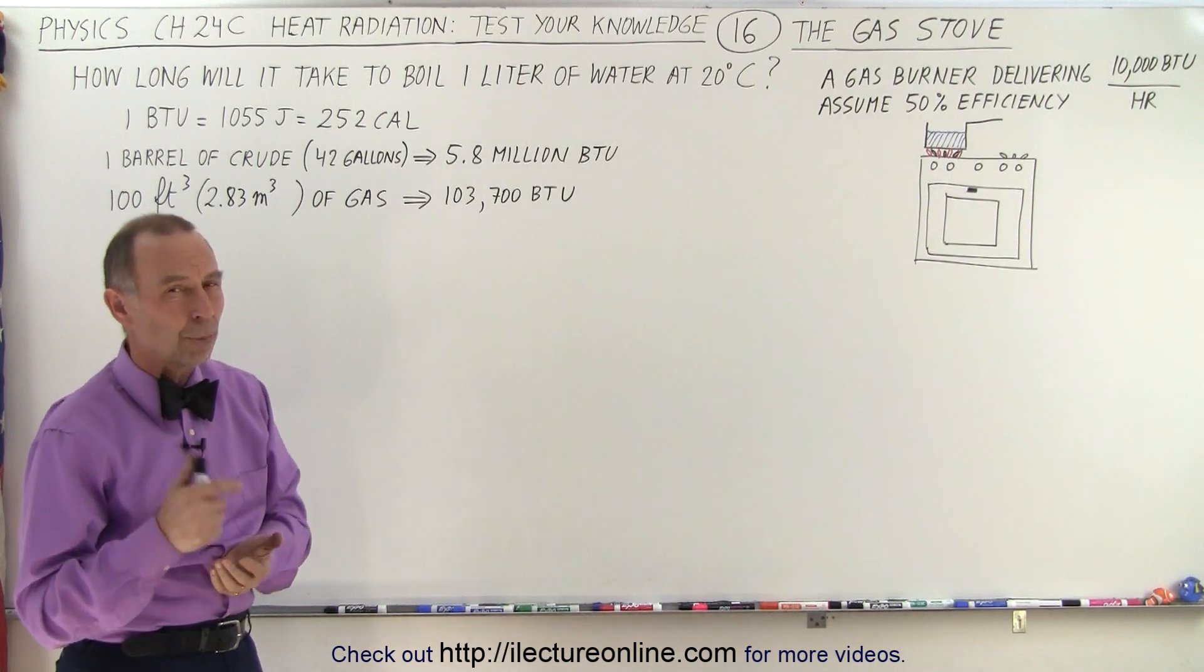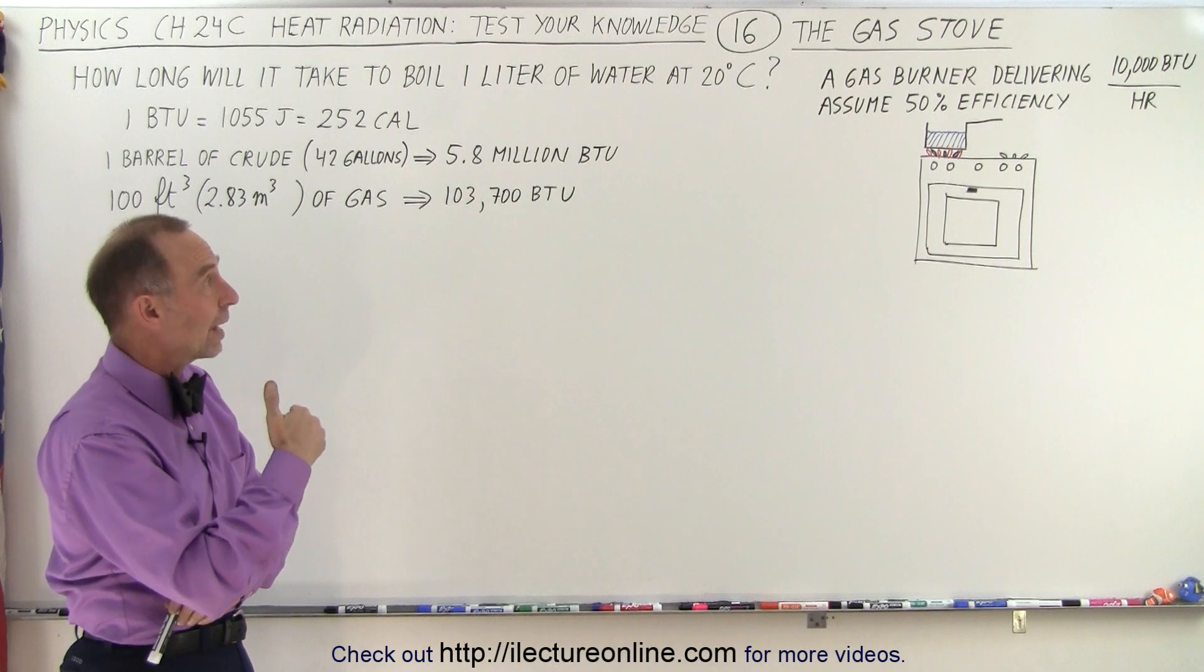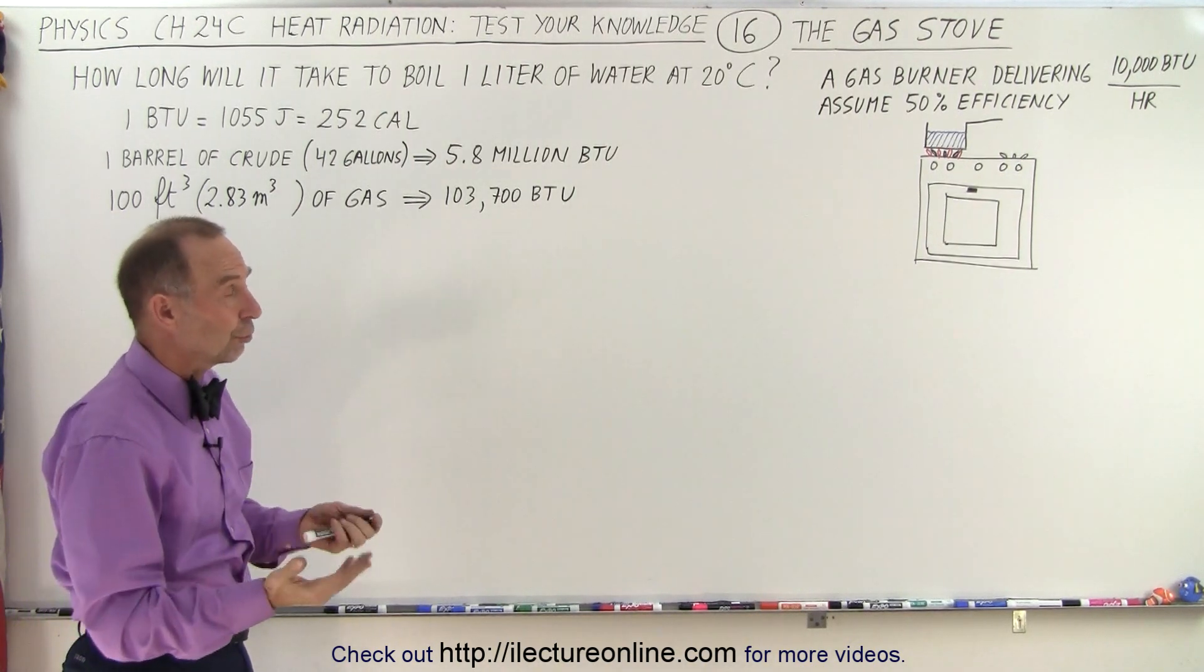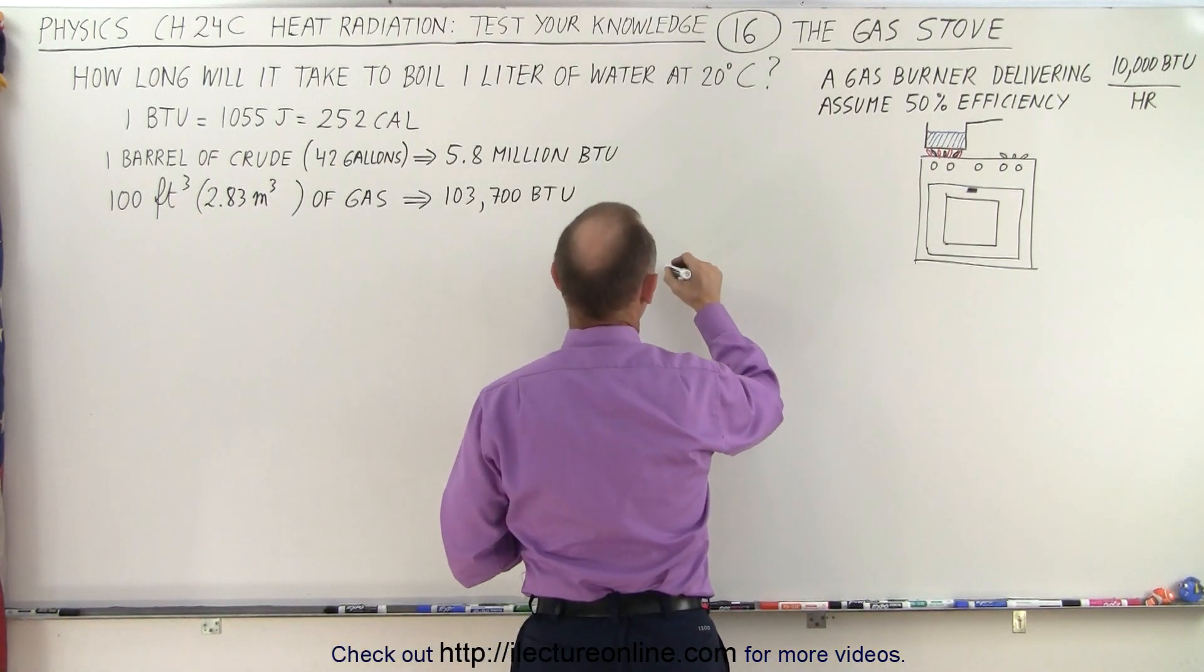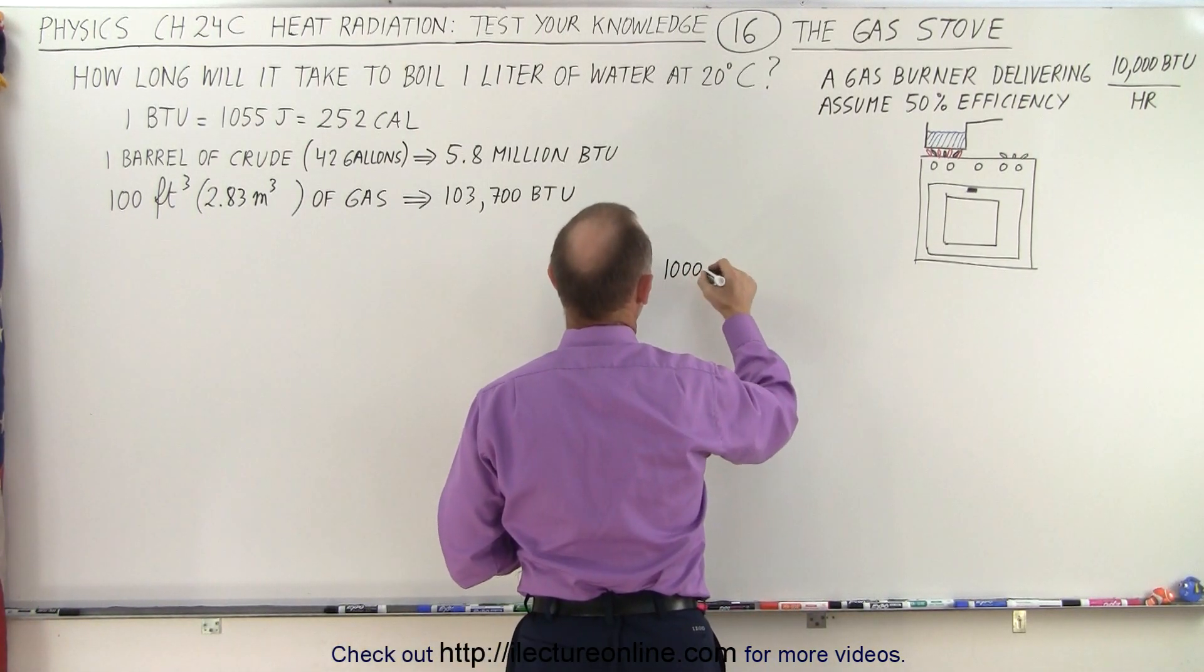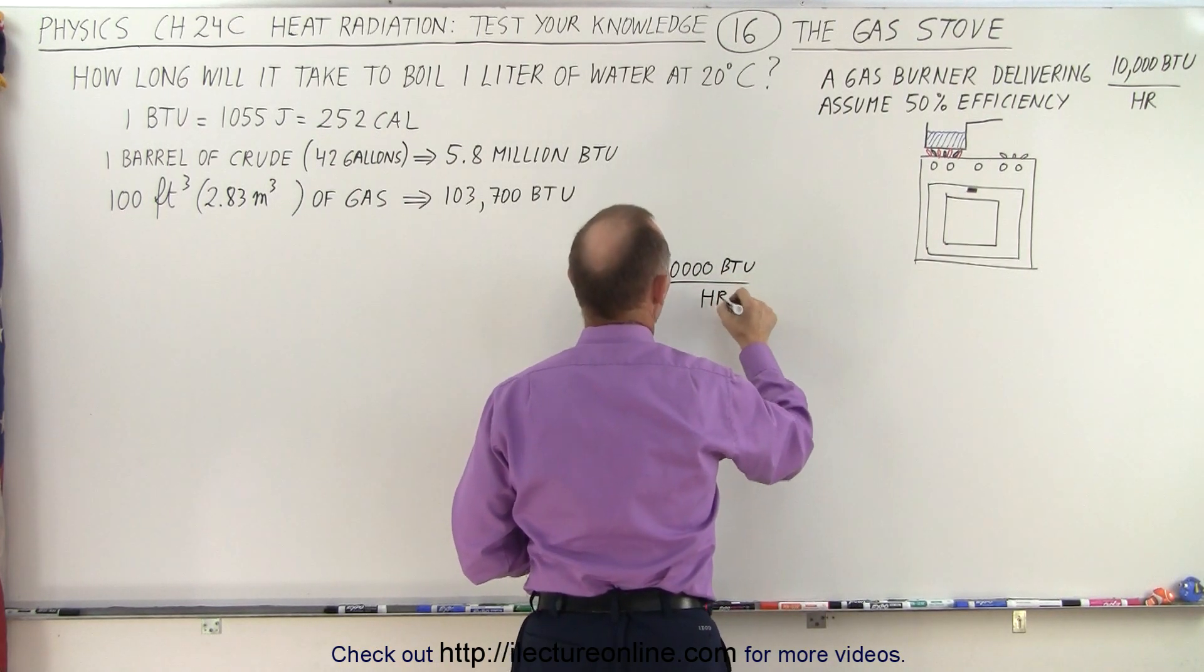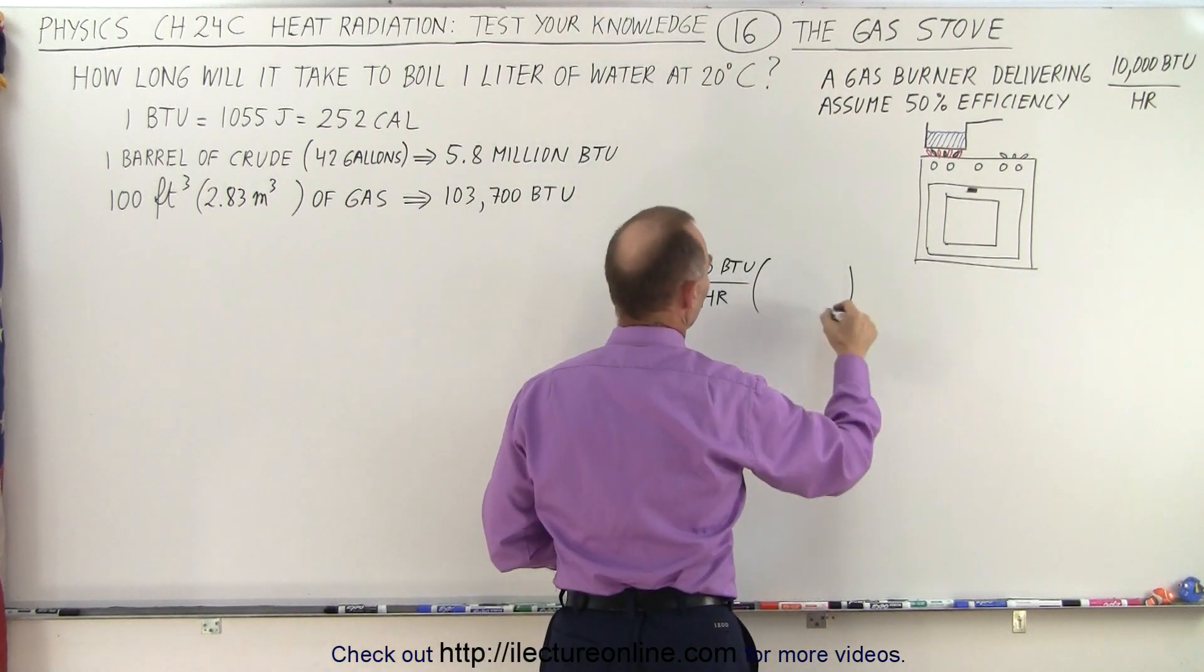So, how fast can we boil that water? What we need here is to figure out how much power is delivered by the burner in terms of joules or calories. So, let's do a conversion here. 10,000 BTUs per hour, which is the power output of the burner. And we can then multiply this times...